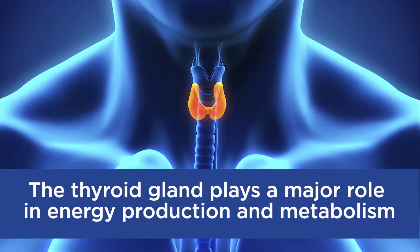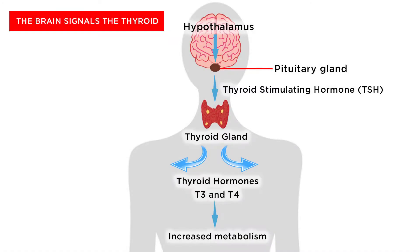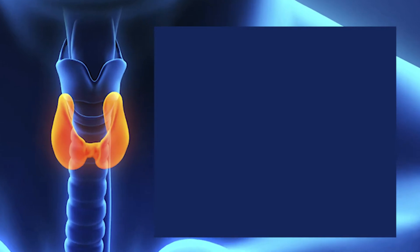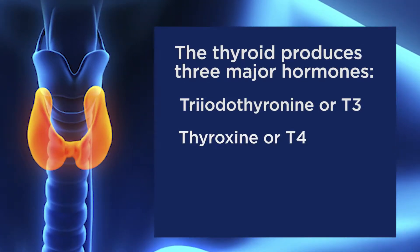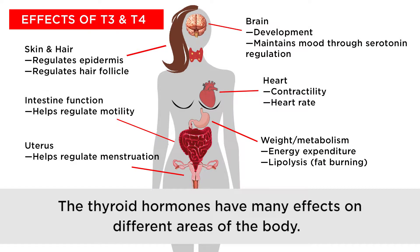The thyroid gland plays a major role in energy production and metabolism. The brain activates the thyroid through thyroid stimulating hormone (TSH), and the thyroid gland then produces T3 and T4 for increased metabolism. The thyroid produces three major hormones: T3, T4, and calcitonin.